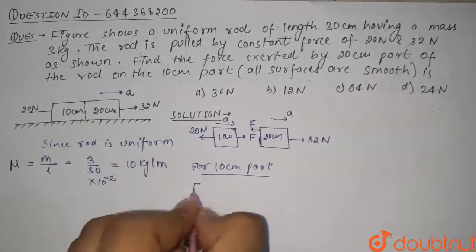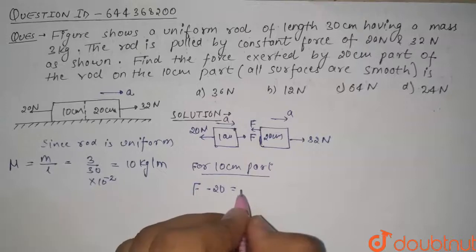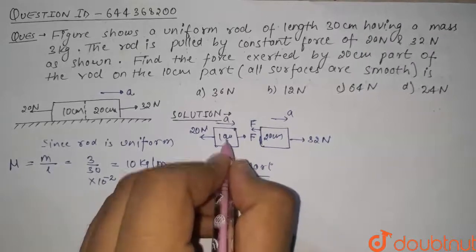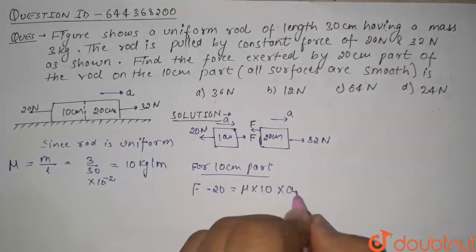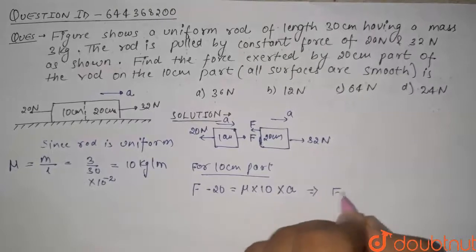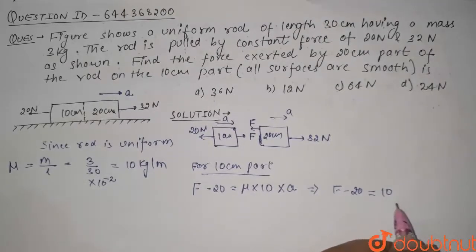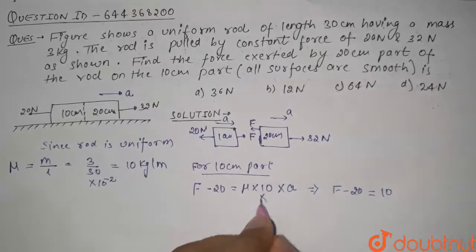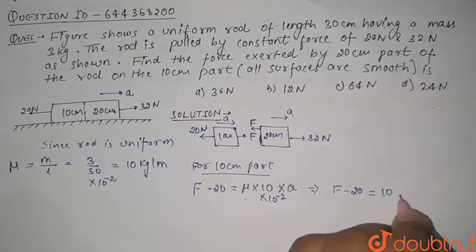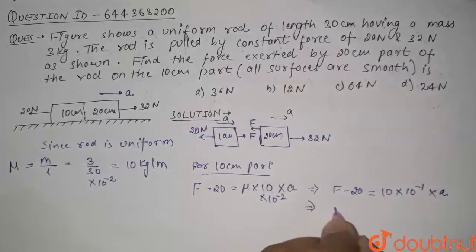For the 10 centimeter part, we can write: F minus 20 equals mass times acceleration. Mass equals mass per unit length μ into length, which is 10 centimeters converted to 0.10 meters. So the mass is 10 kg/m times 0.10 m, giving 1 kg. Therefore F minus 20 equals 1 times a, giving us our first equation: F minus 20 equals a.